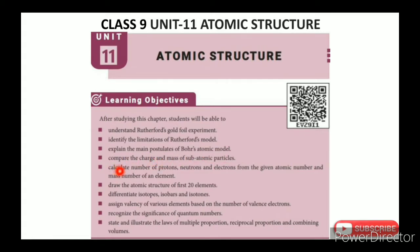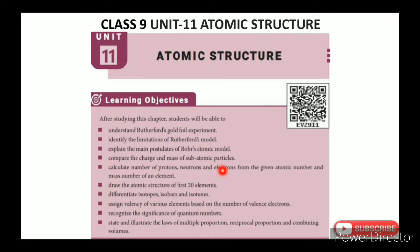Further objectives include: compare the charge and mass of subatomic particles; calculate number of protons, neutrons and electrons from the given atomic number and mass number; draw the atomic structure of the first 20 elements; differentiate isotopes, isobars and isotones; assign valency based on valence electrons; recognize the significance of quantum numbers; and state the laws of multiple proportion, reciprocal proportion and combining volumes.